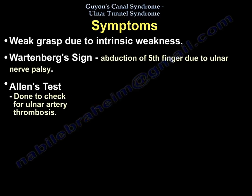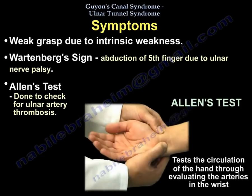The patient may have weak grasp due to intrinsic weakness. Wartenberg sign — abduction of the fifth finger due to ulnar nerve palsy. The Allen test is also performed to check for ulnar artery thrombosis; it tests the circulation of the hand by evaluating the arteries in the wrist.